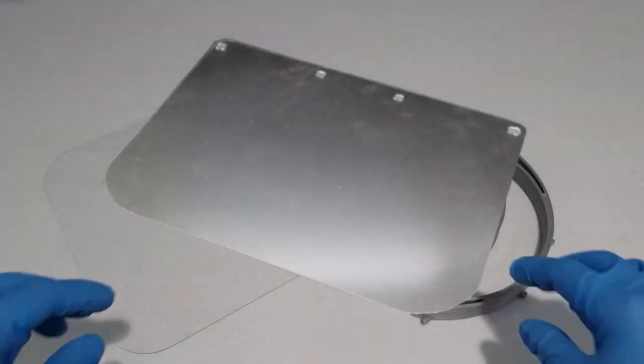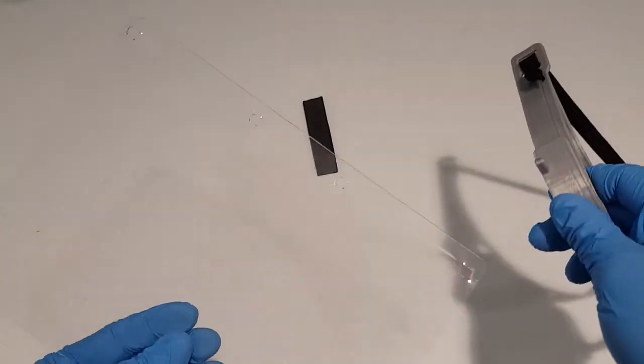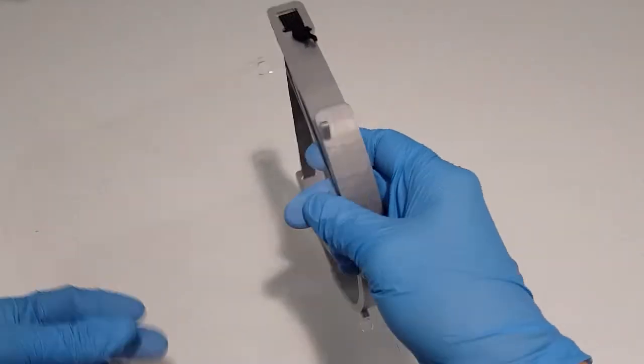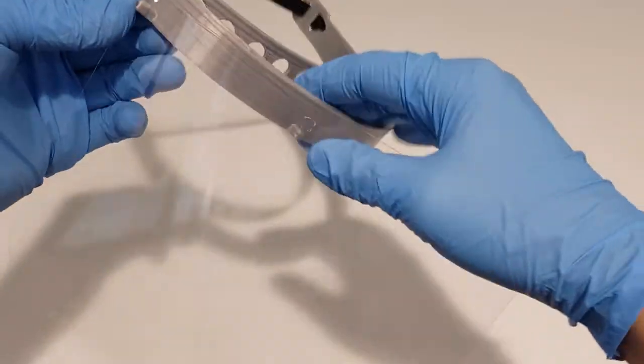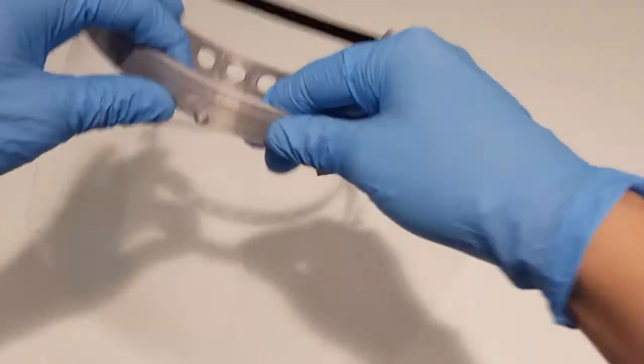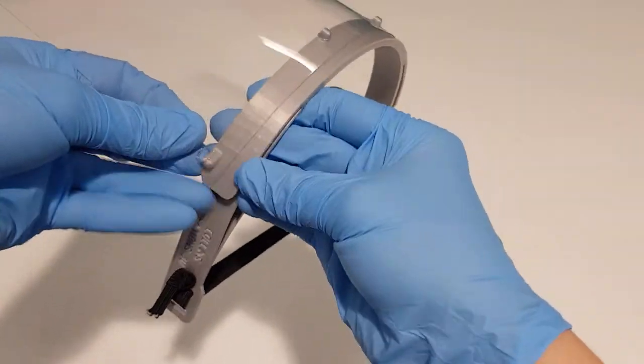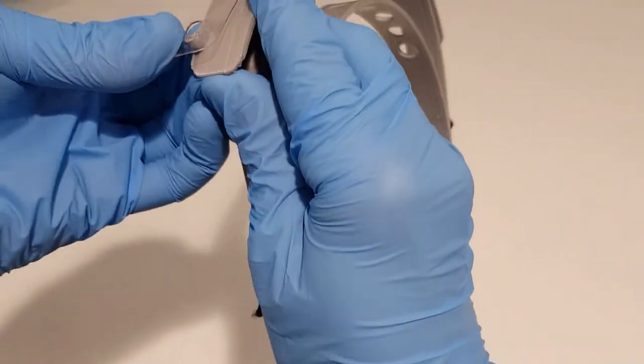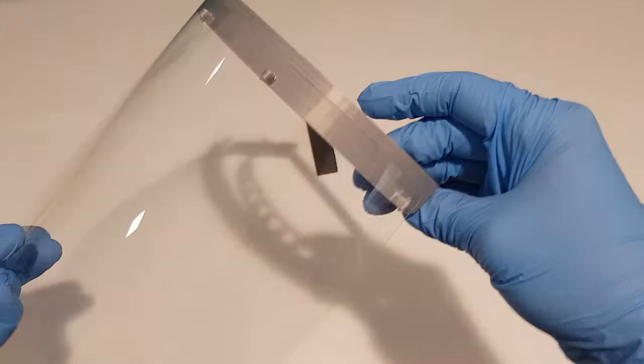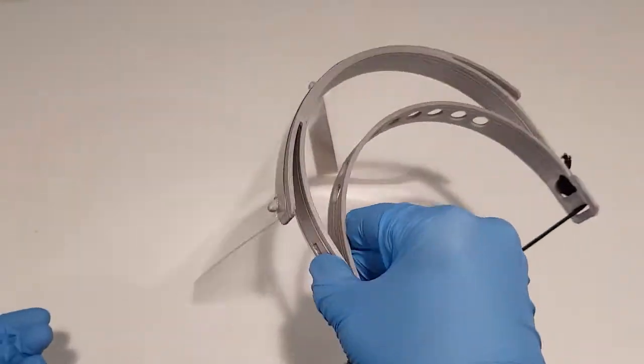Mount the PETG face shield on the headband using the second hole from the right. Hold it with your thumb. Carefully straighten the right side of the headband along the face shield and insert the pin. As soon as the pin is through you can release the thumb.